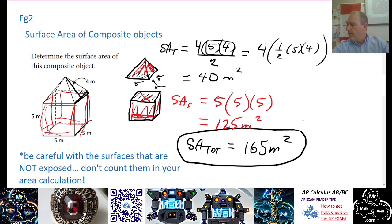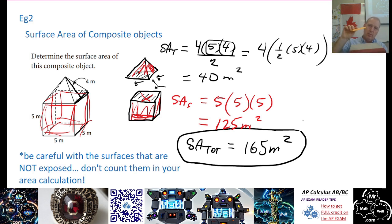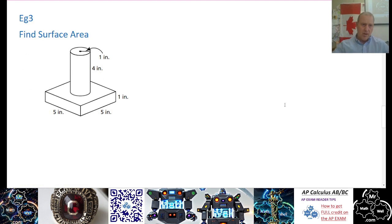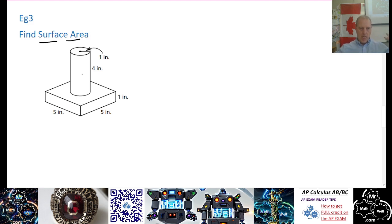Remember: when you have two things stuck together, you have to be careful. The bottom side of the piece on top is not counted, and there's also a part of the top of the lower piece that has to be subtracted. Let's move to the last example. Volume here would be easy — volume of the rectangular prism plus the volume of the cylinder. But surface area is where we have to be careful.